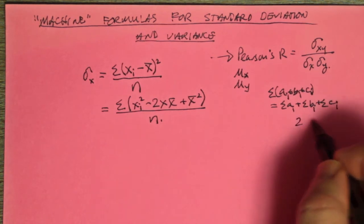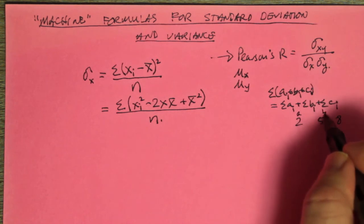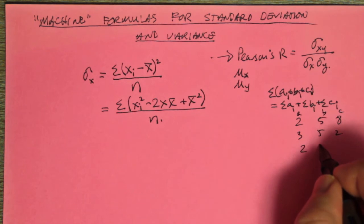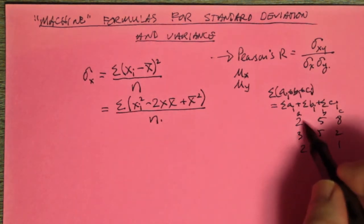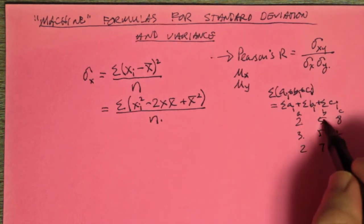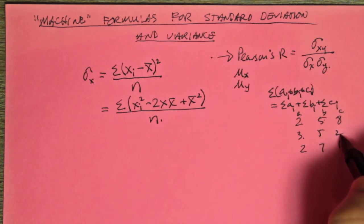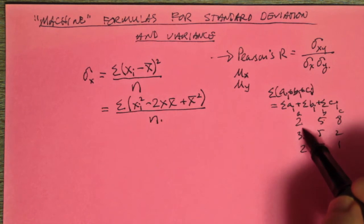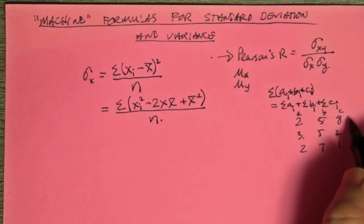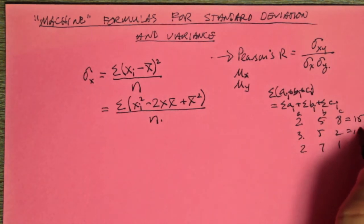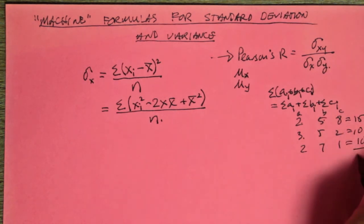For example, if I had 2, 5, 8 as my A, B, and C, and I had 3, 5, 2 and 2, 7, 1 — those being A1, A2, A3, B1, B2, B3, C1, C2, C3 — using this formula: 2 and 5 is 7, and 8 is 15. 3 and 5 is 8, and 2 is 10. 2 and 7 is 9, and 1 is 10. 15 and 10 and 10 is 35.